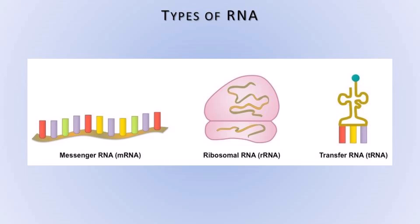Messenger RNA, that is mRNA — the RNA molecule that carries the information of protein synthesis from genes, that is the DNA chain in the cell nucleus, to ribosomes in the cytoplasm, which produce the protein, is called messenger RNA.